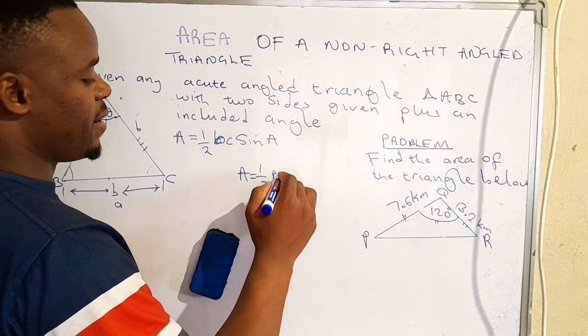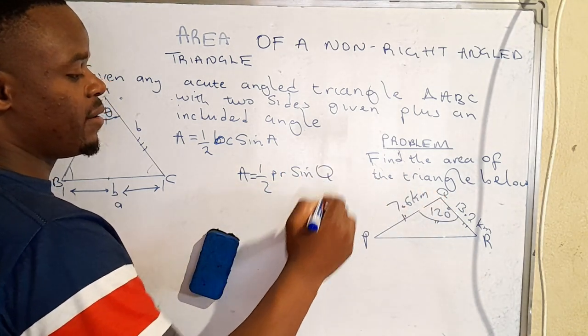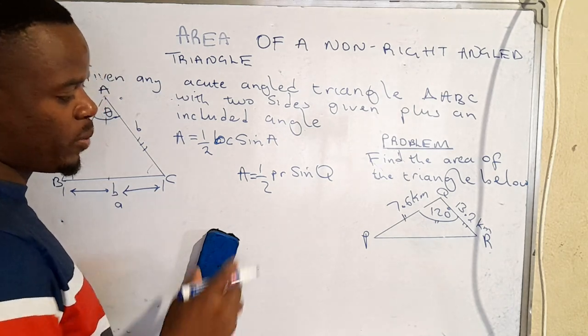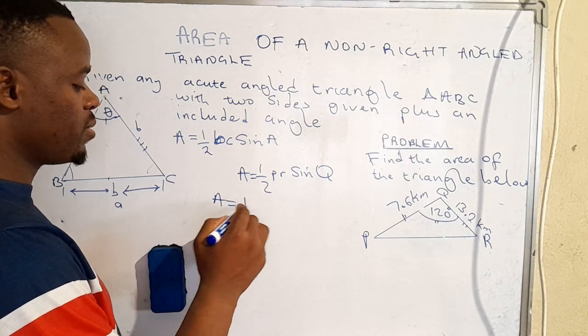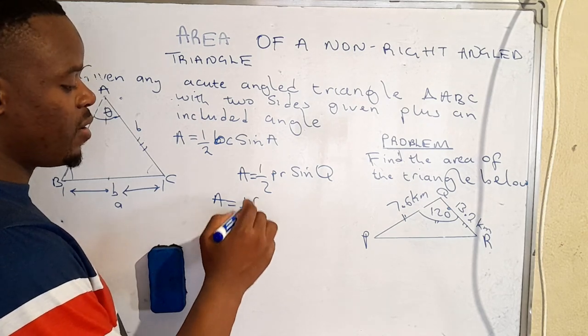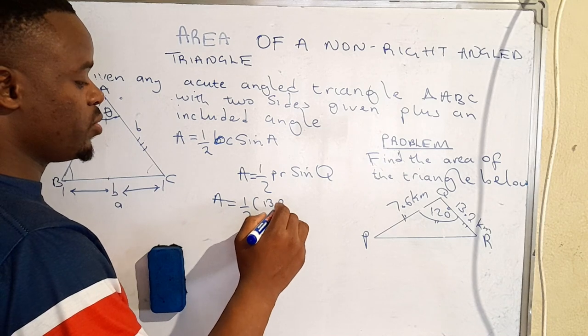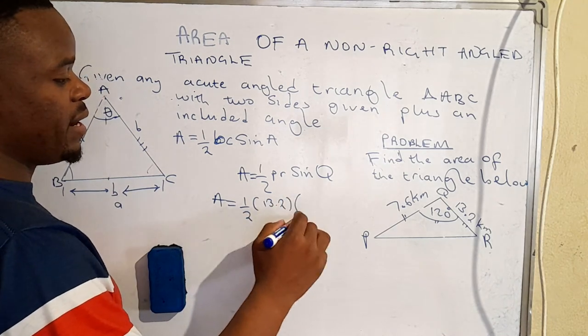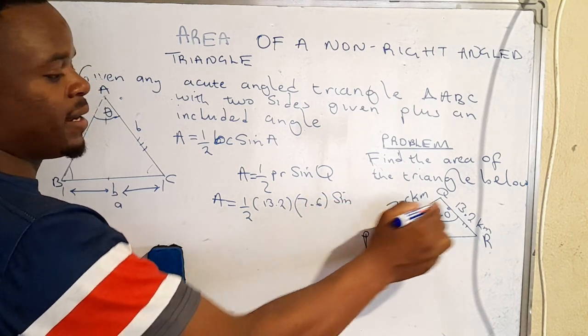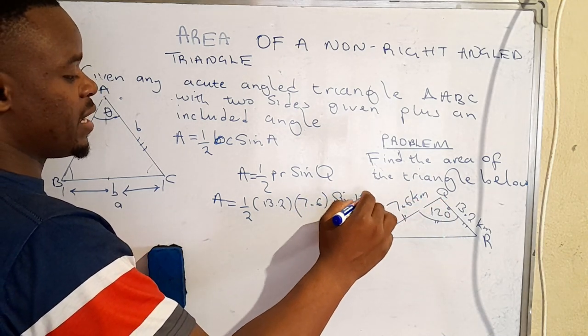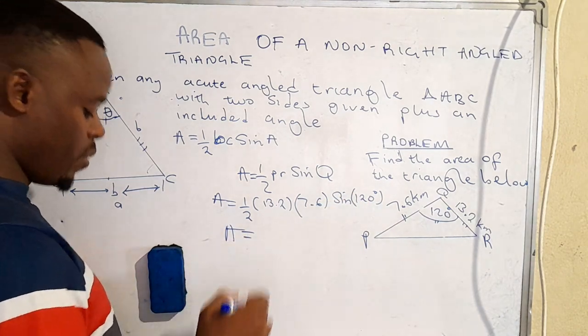and the other side is r, times sine angle Q. So we can now plug in the value. So that would be area is equal to half, p is actually 13.2, then r is 7.6,